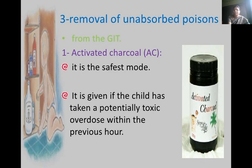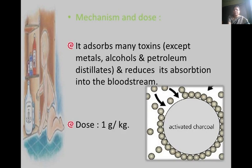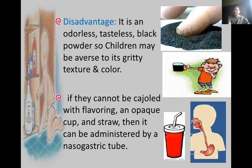For removal of unabsorbed poison from the GI tract, activated charcoal is the most effective method. It is the safest mode and is given if the child has taken a potentially toxic overdose in the previous hour. It absorbs many toxins except metals, alcohol, and petroleum, and reduces their absorption into the bloodstream. The dose is 1 gram per kg. A disadvantage is that activated charcoal is an odorless, tasteless black powder, and children may be averse to its texture and color.